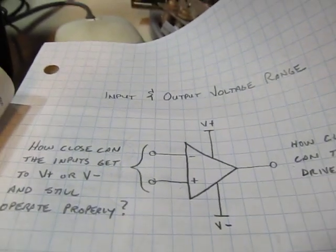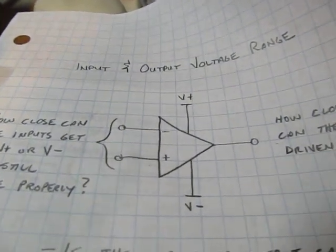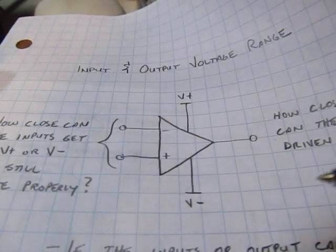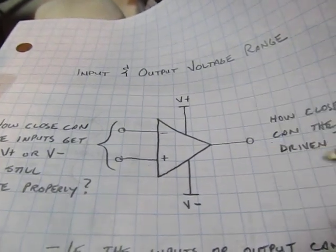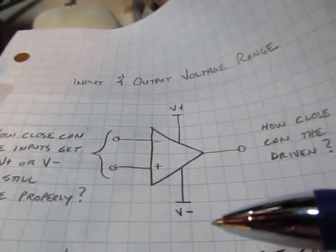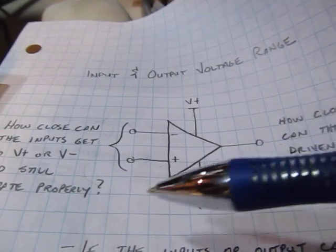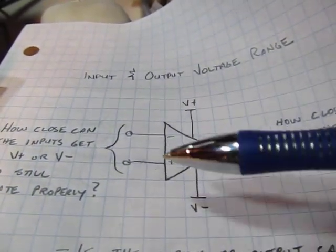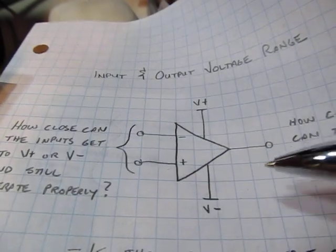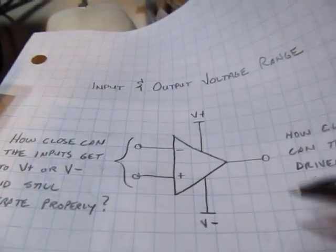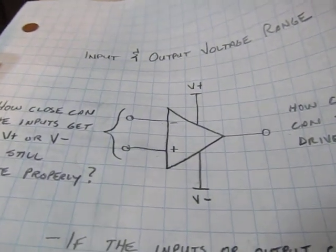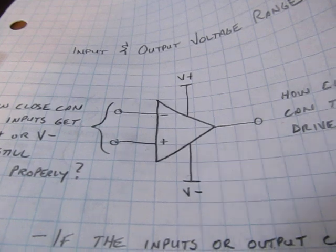And you'll start to hear terms like rail-to-rail op amps, and usually when you hear a term called rail-to-rail op amp, that means that either the inputs or the outputs or both or just the output can swing rail-to-rail or can be brought from one supply rail to the other. Sometimes the op amps will have, maybe the inputs can go to ground and the output can swing rail-to-rail. There'll be different combinations, but those are the things that you can look for depending on where you need your signals to be used.